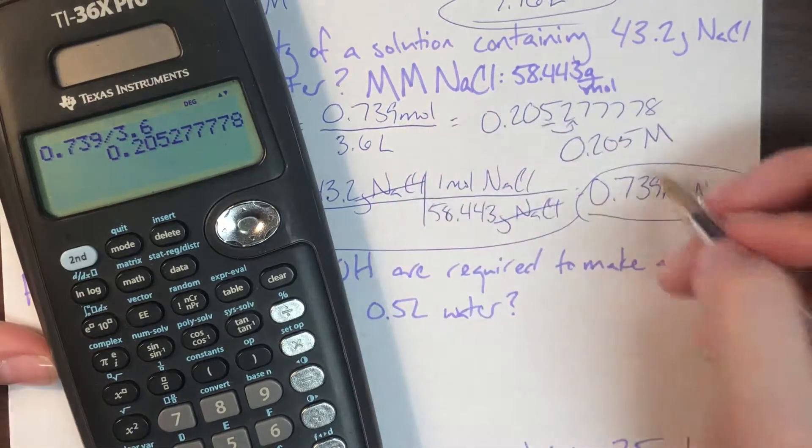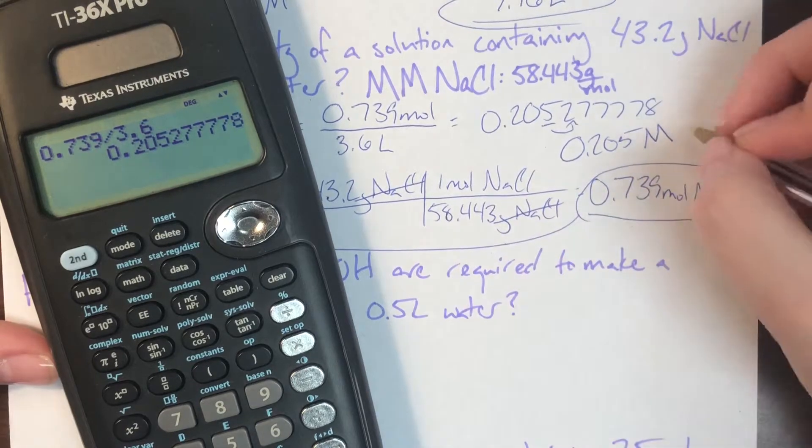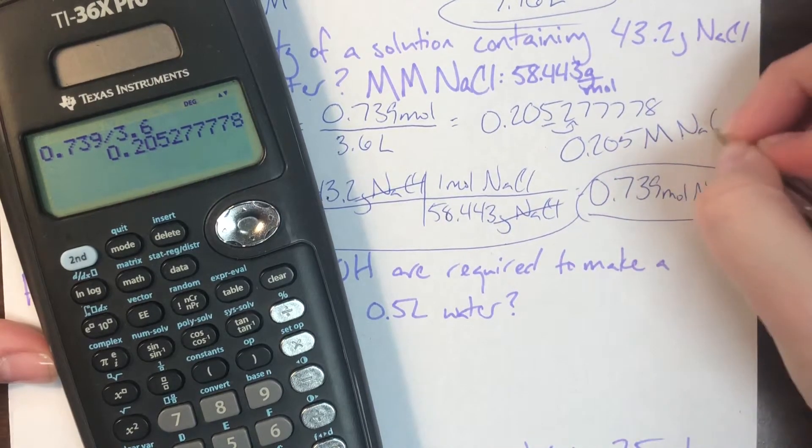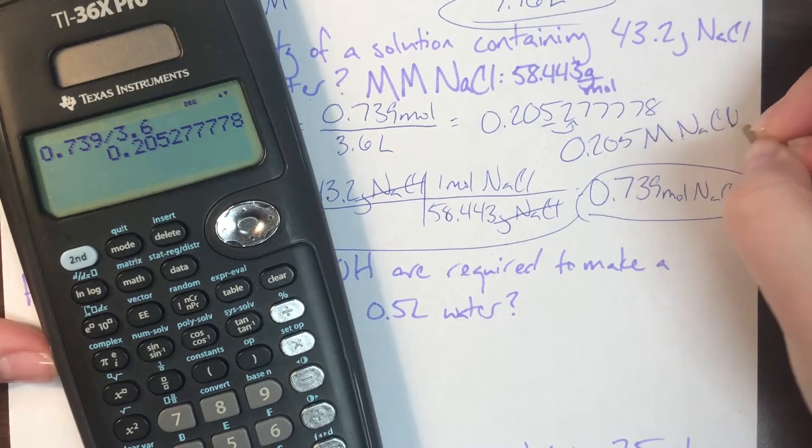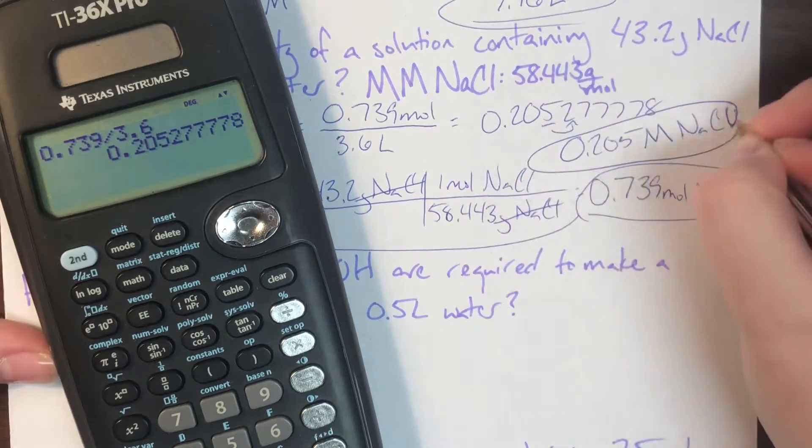Remember, moles per liter can be shortened to a capital M, and this is going to be of sodium chloride.